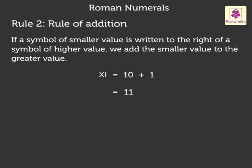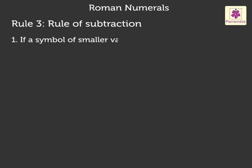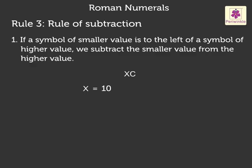Finally, we have the third rule. Rule 3: Rule of subtraction. If a symbol of smaller value is to the left of a symbol of higher value, we subtract the smaller value from the higher value. For example, let us take the number XC. X has a value of 10 and C has a value of 100. So XC will be 100 minus 10, which is equal to 90.